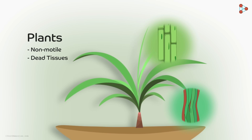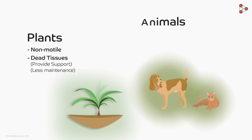A closer look at a plant tissue will make you realise that most of them have dead tissues. Plants only need mechanical support, so they do not need living tissues. Dead tissues serve the purpose of giving support to plants and need very little maintenance. Animals, on the other hand, move from place to place and need tissues for purposes more than just physical.